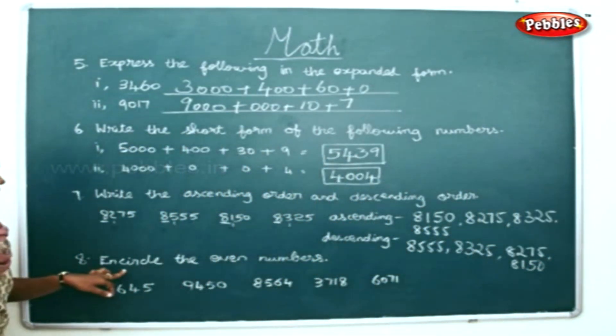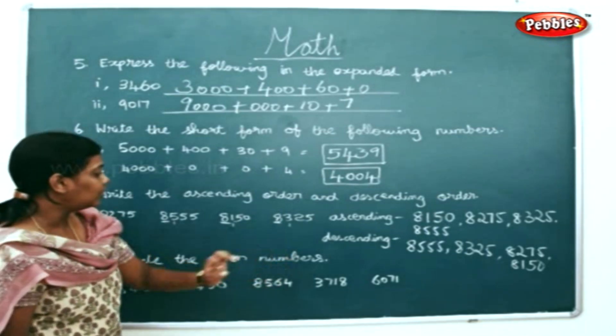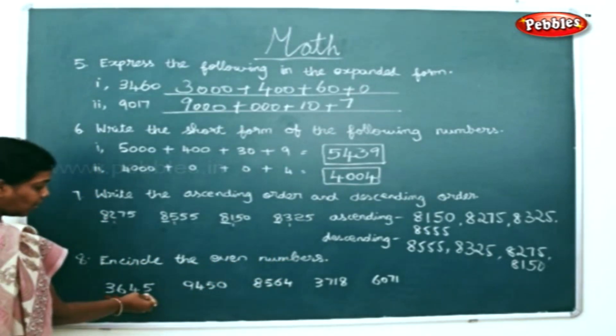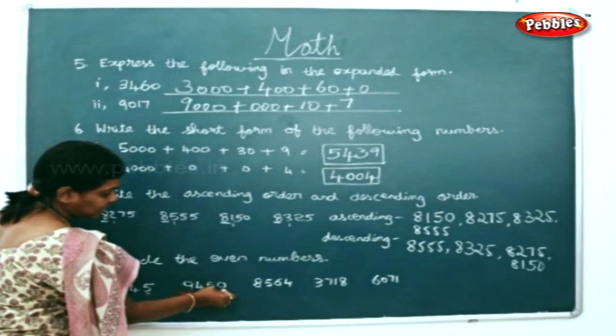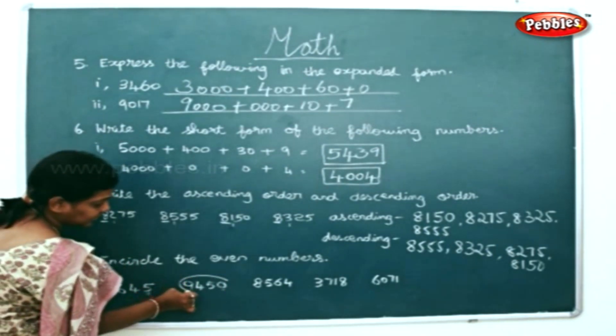Now encircle the even numbers. How will you find the even numbers? You must look at the ones place. 5 is an odd number. 0 is an even number, so I am circling this.